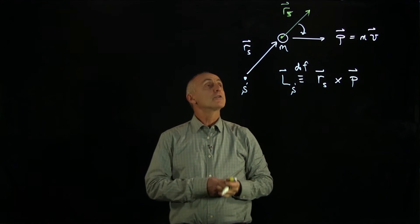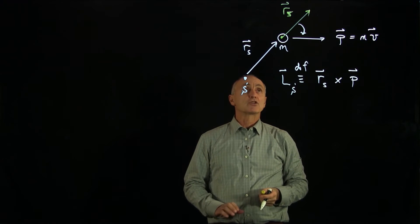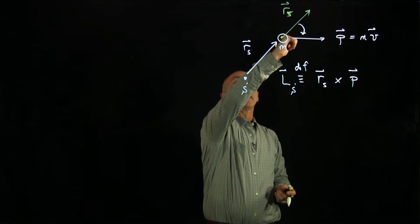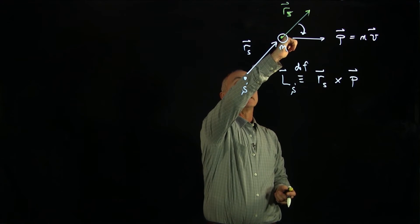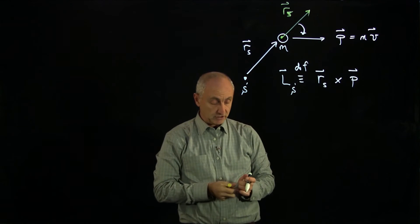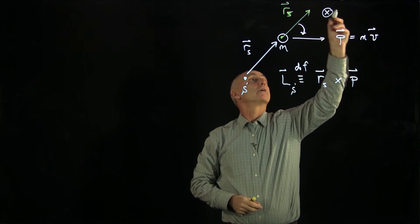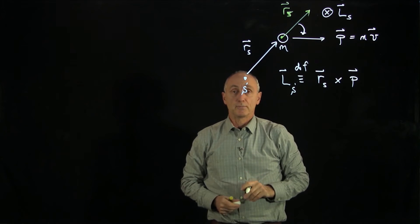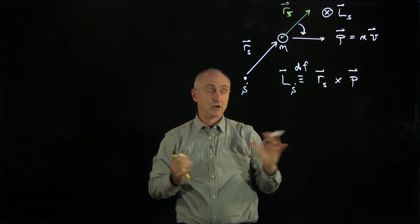And now we want to use our right-hand rule to get the direction of the angular momentum. So we curl our fingers, and notice in this case it's pointing into the plane of the figure. And so the direction of the angular momentum about s is given into the plane of the figure in our light board.